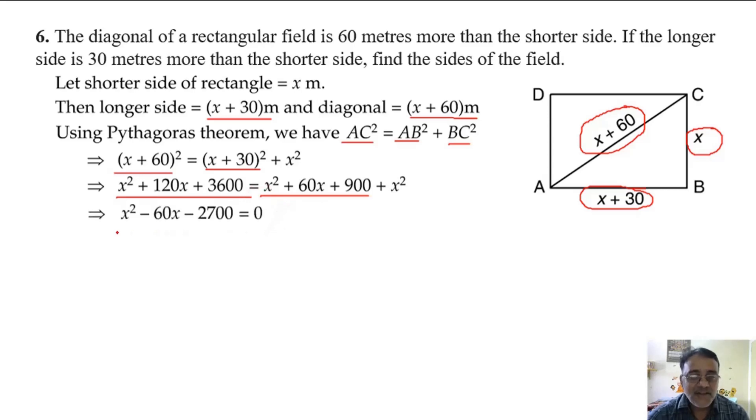If you simplify, you will get this quadratic equation: x² minus 60x minus 2700 equals 0.